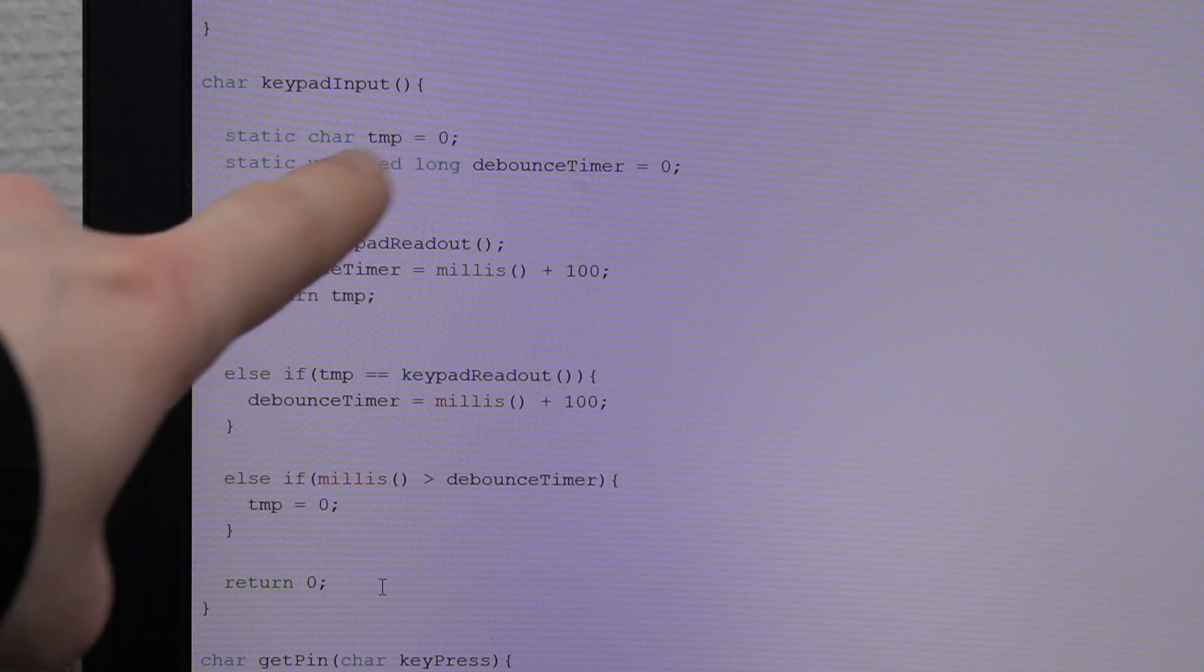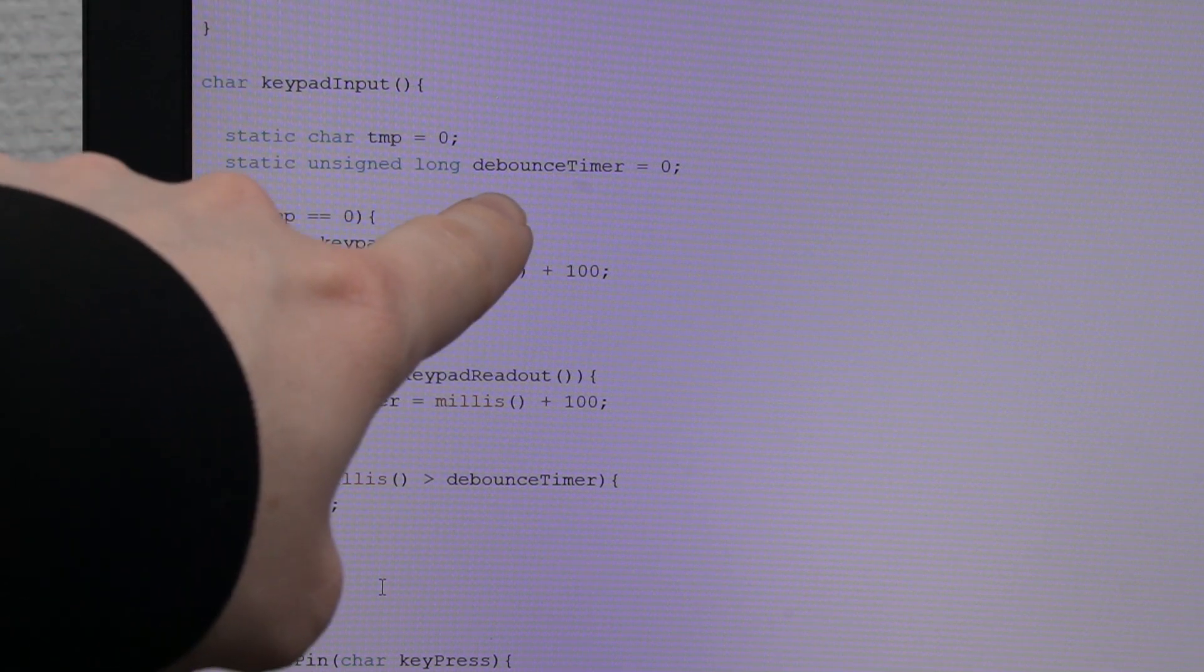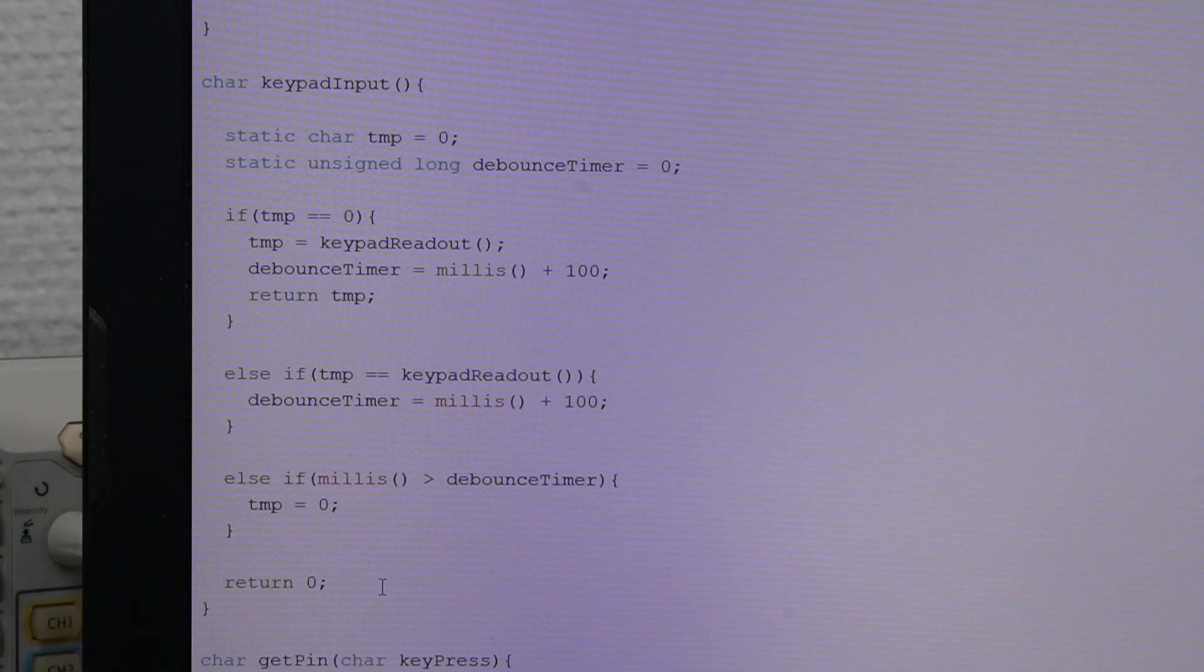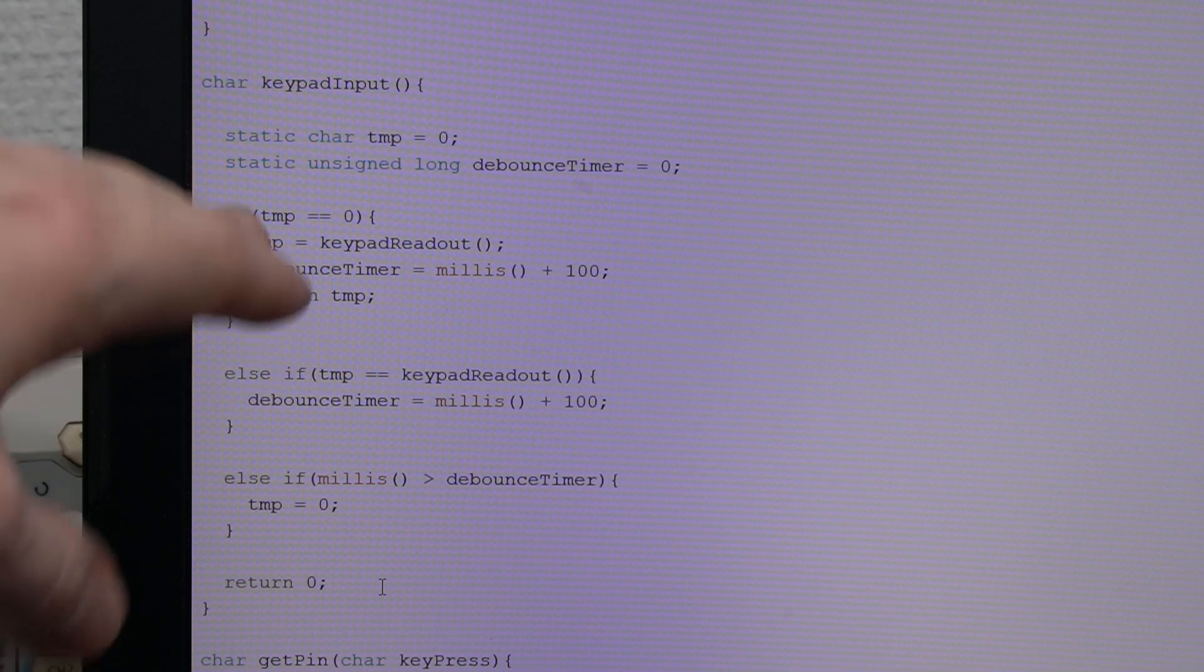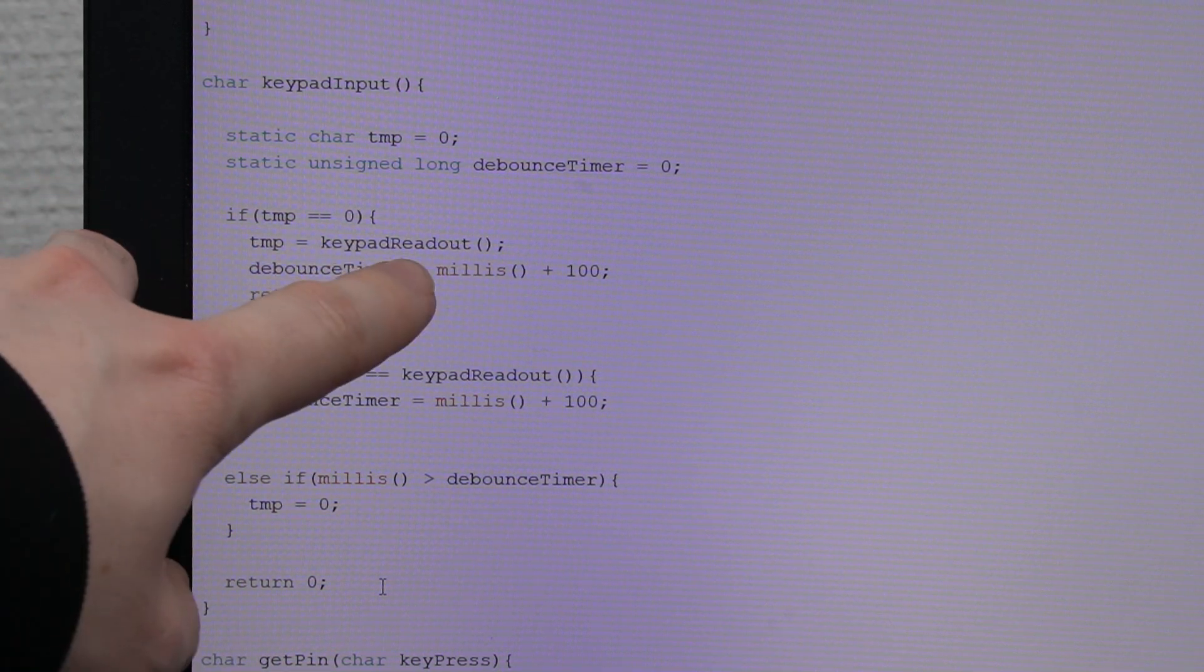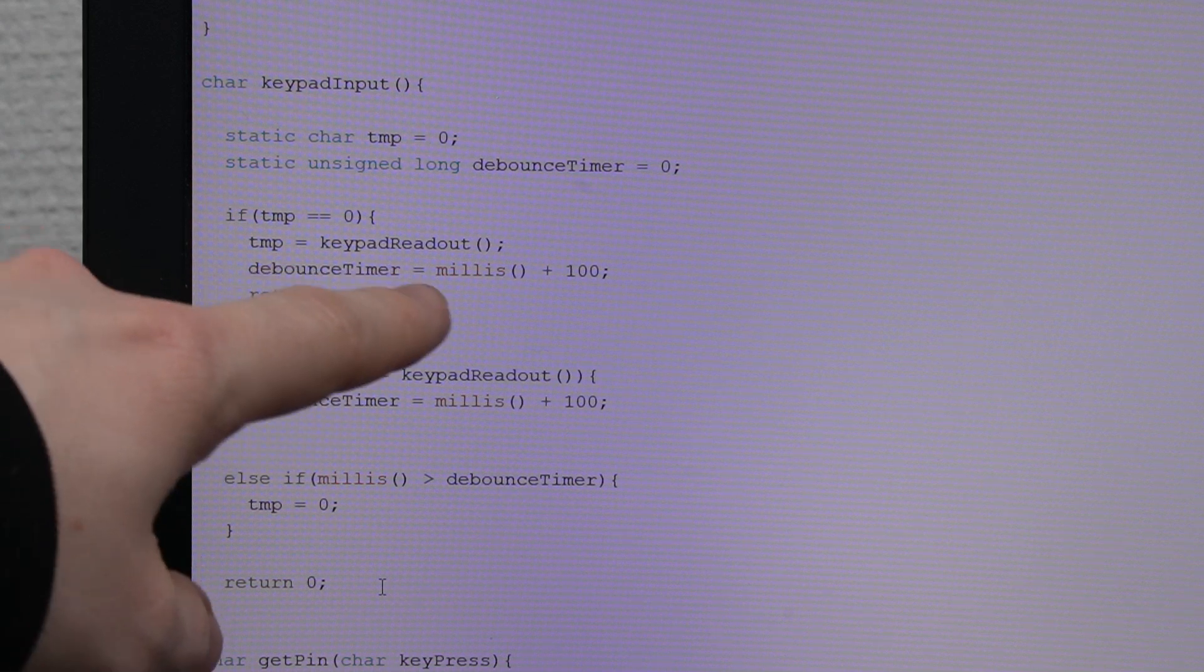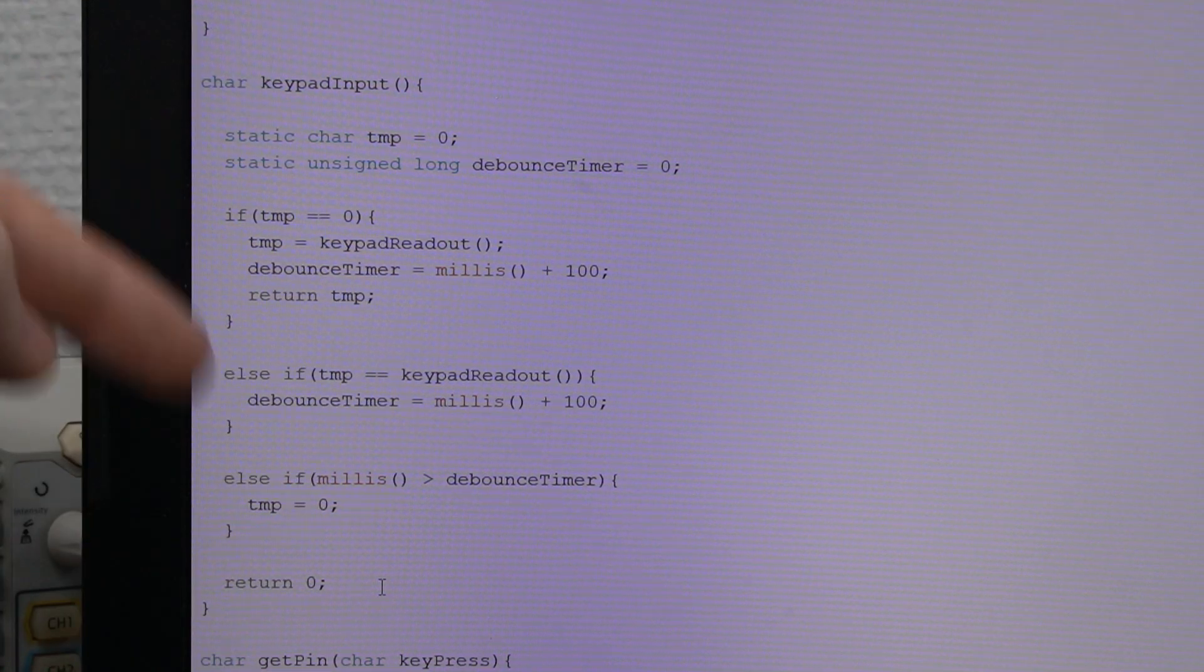The way I handle this is with some static variables. One is a temp variable that holds the previous button press and a debounce timer. So if temp is zero, which means that nothing has been pressed previously,